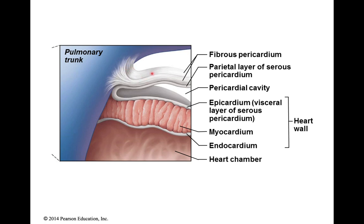Outside of that is your last layer. It's also somewhat thick and very strong, and it connects to the pulmonary trunk. This fibrous layer is called the fibrous pericardium, and it actually encircles the entire heart — it's almost like the bag that holds the heart. The space in between the parietal and visceral layers of the serous pericardium is called the pericardial cavity.